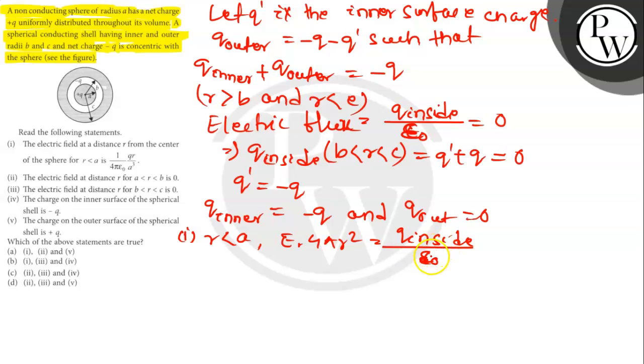As charge is uniformly distributed, Q_inside equals R³Q by A³. So E times 4π R² equals R³Q divided by A³ epsilon_0.